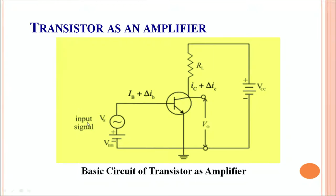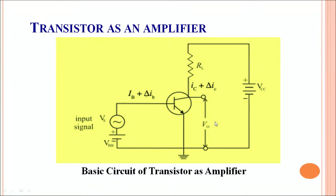In the output circuit, the output voltage is measured across the load resistance. An increase in the input current leads to an increase in the collector current by a small amount delta IC. Thereby there is a large voltage gain across the load resistance. Thus the input signal is amplified when it is measured across the output voltage RL.